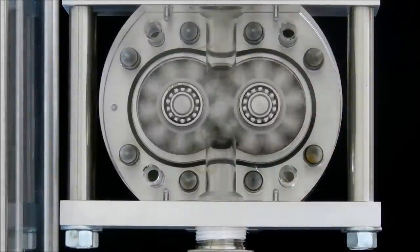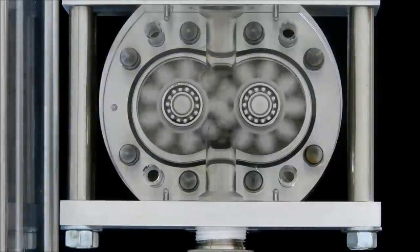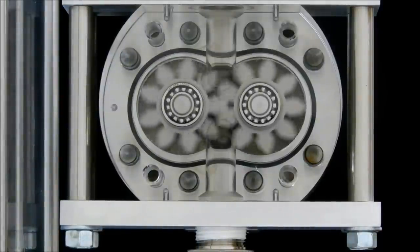Positive displacement flow meters divide a flow stream into fixed, known volumes and count them to determine the total flow and flow rate.